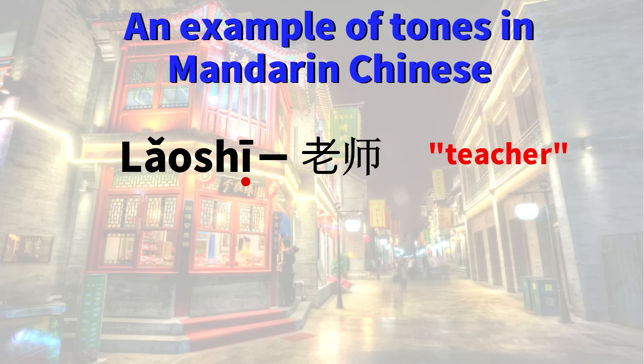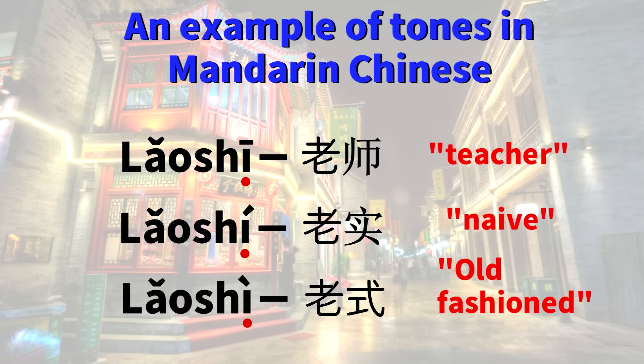Here's an example. The word for teacher: 老师. And the word for naive: 老师. And the word for old-fashioned: 老师. So I'm sure that Chinese teachers get called naive and old-fashioned all the time by mistake, or maybe not by mistake.